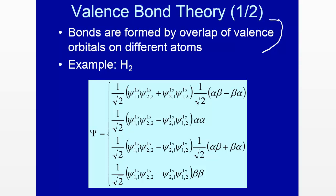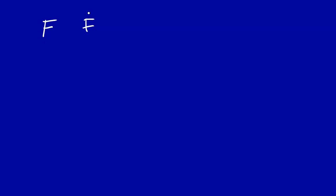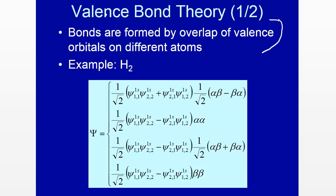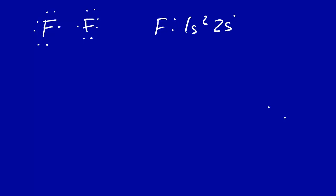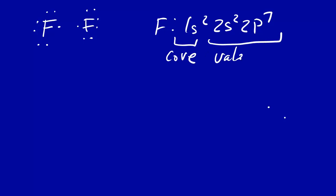Let's look at that in more detail using fluorine as an example. The Lewis dot structure has seven electrons around a fluorine atom. If we translate that into quantum mechanics, the electron configuration of fluorine is 1s², 2s², and 2p⁵. The 1s and 2s are core electrons, and the 2s and 2p electrons are the valence electrons.